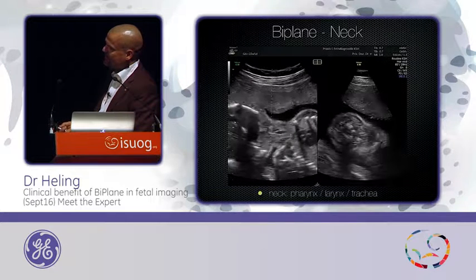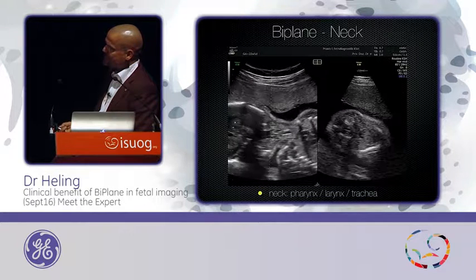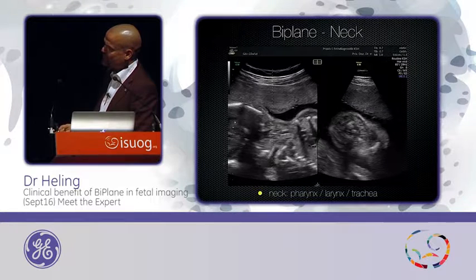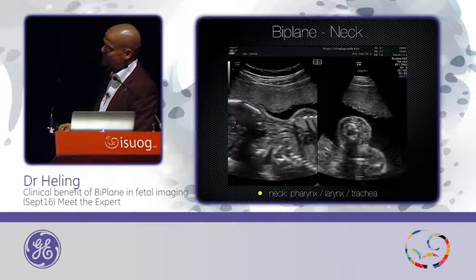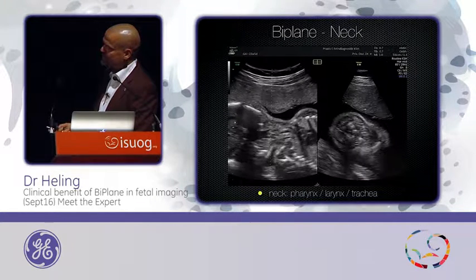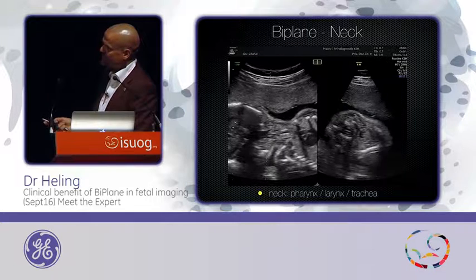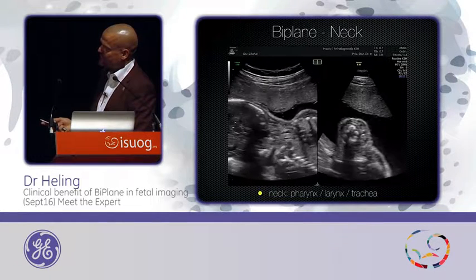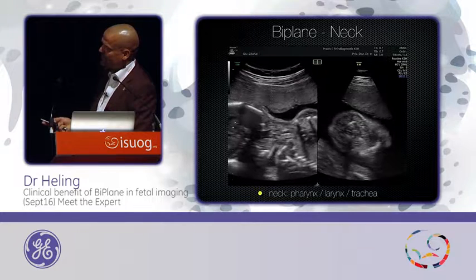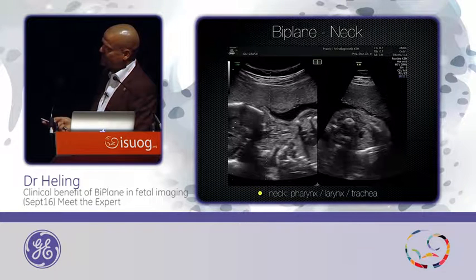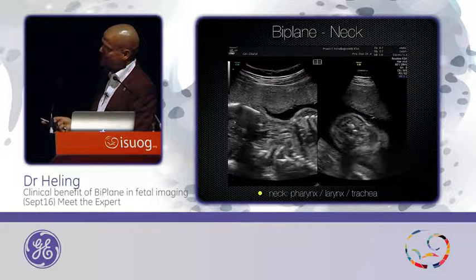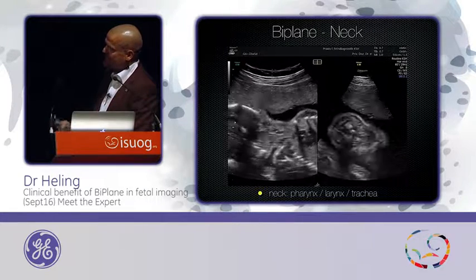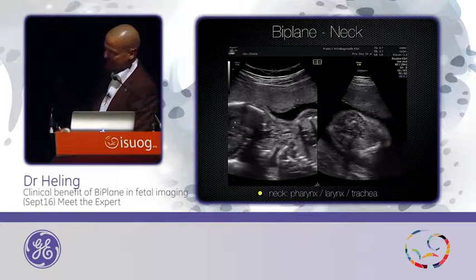This is a look through the neck — a coronal view. I move my line from the pharynx via the vocal cords to the trachea, and you see what happens: you can describe the complete normal anatomy. You see the pharynx, the vocal cords, and then you are inside the trachea. You can describe the normal anatomy completely.